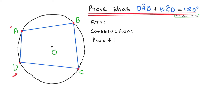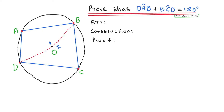So we're going to construct the radii. We'll construct the radius to B and the radius to D — those are your radii OD and OB. Then you label your center: this part here will be O1 and this part here will be O2.